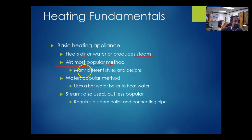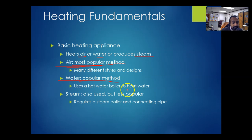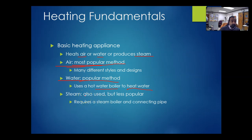Water heating is still not the most popular, especially in western Massachusetts, but it comes in many different styles and designs. You can heat air using gas, a heat pump, or oil. Water systems use either a water boiler — which uses fire — or a water heater, which could be a heat pump or electrical heaters. Steam systems must use combustion and are mostly either gas or oil.